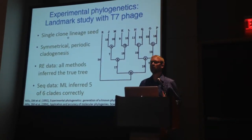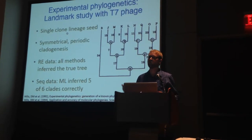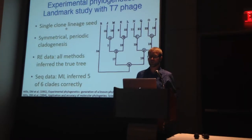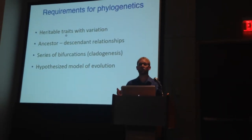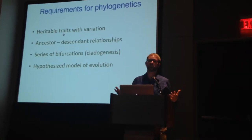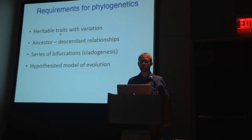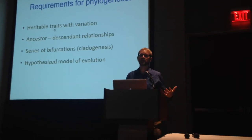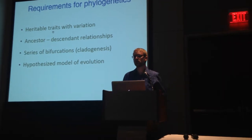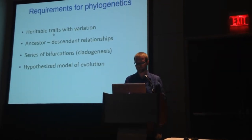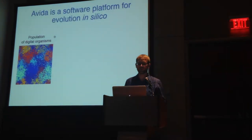We were interested in replicating this by harnessing the abilities of a different system to make it more feasible to conduct different experimental phylogenetic analyses. If we're going to look at a completely different system, all the requirements for phylogenetics need to be met: heritability, traits for variation, ancestor-descendant relationships, cladogenesis, and if we're going to use maximum likelihood, Bayesian inference, and modern methods, we need a model of evolution.